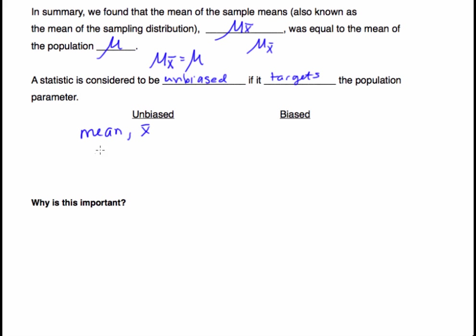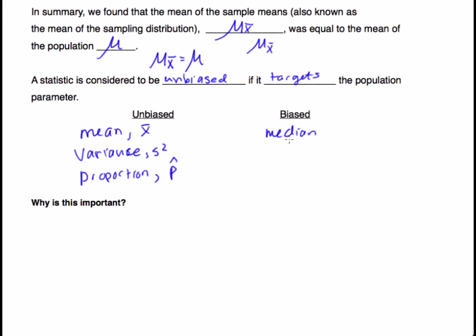The sample variance s-squared is also unbiased. The population proportion p-hat is also unbiased. Some biased estimators include: the median, the range, and the standard deviation.